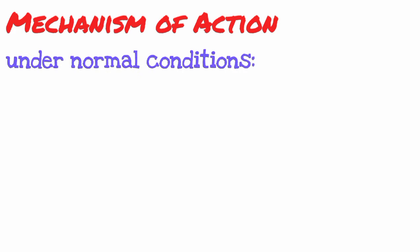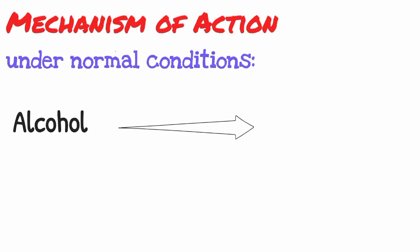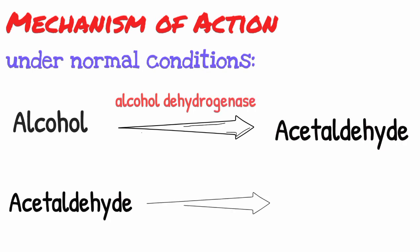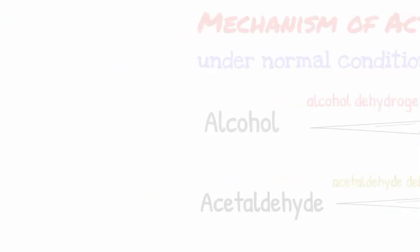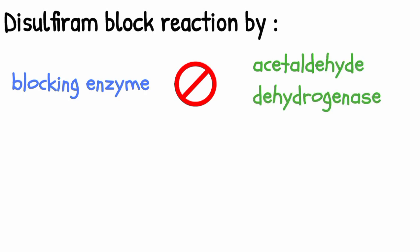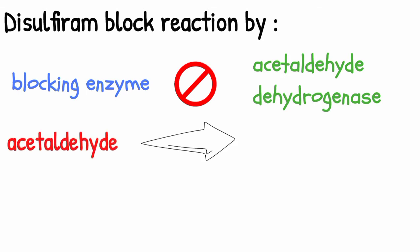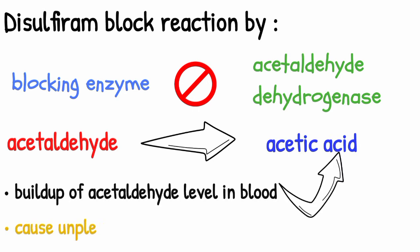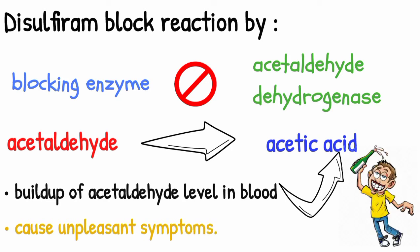If we talk about the mechanism of disulfiram-like reaction, under normal conditions, alcohol is broken down in the liver by an enzyme called alcohol dehydrogenase to acetaldehyde, which is then converted by an enzyme acetaldehyde dehydrogenase to harmless acetic acid. Disulfiram blocks this reaction at the intermediate stage by blocking the enzyme acetaldehyde dehydrogenase, preventing it from converting acetaldehyde into acetic acid, leading to a buildup of acetaldehyde levels in the blood which causes unpleasant symptoms after drinking alcohol.